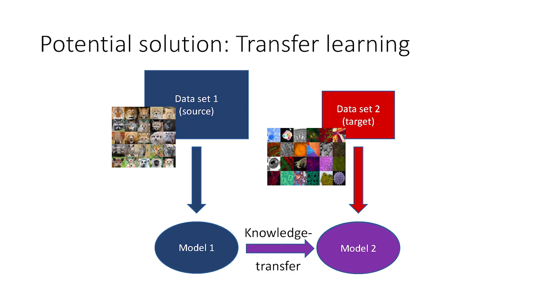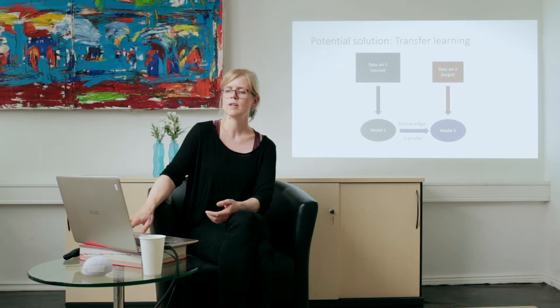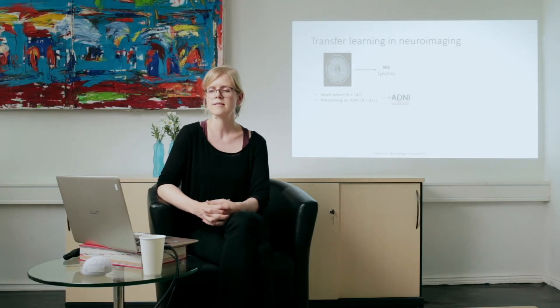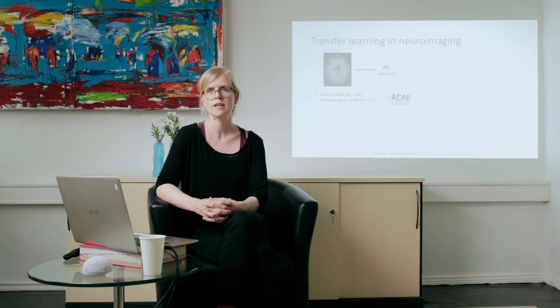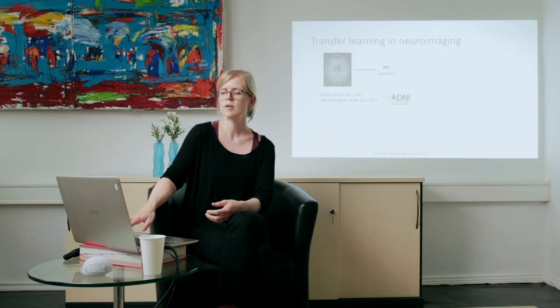Now I'd like to show another example: multiple sclerosis. You see two axial slices of an MR image — one from an MS patient and one from a healthy control. The patient is on the left. MS is an autoimmune disorder characterized by small spots of inflammation called lesions, which are clearly visible on these FLAIR images. It's important to keep in mind that those lesions are not specific to MS but can also occur in healthy controls.